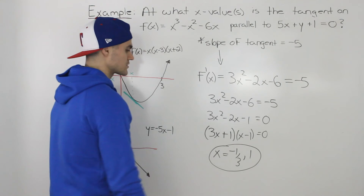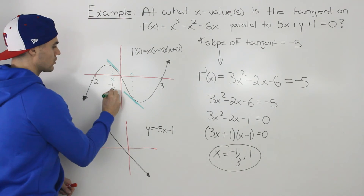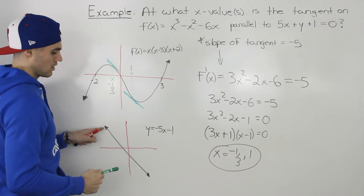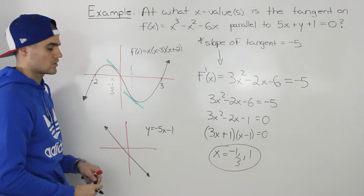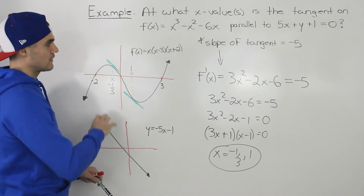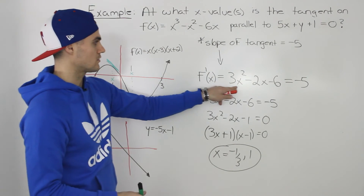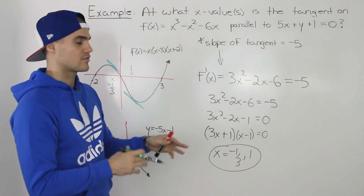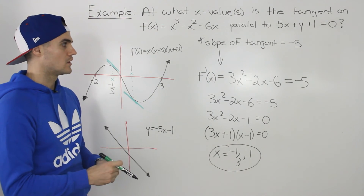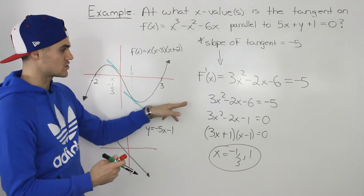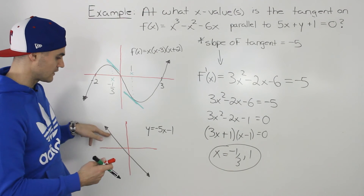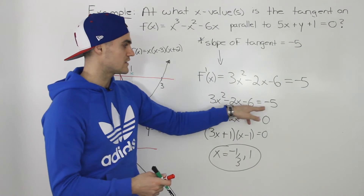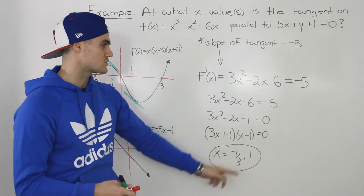So our answers are x = -1/3 and x = 1. At those x values, the slopes of the tangents are parallel to the line 5x + y + 1 = 0. We found the derivative 3x² - 2x - 6, which gives the slope of the tangent at any x value, set it equal to -5, brought the -5 over, and solved to get those two x values.